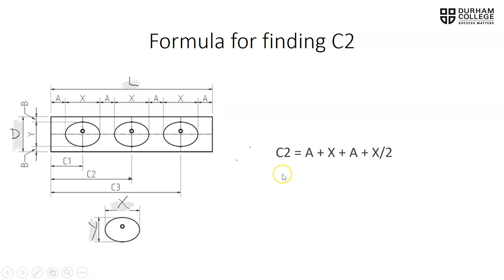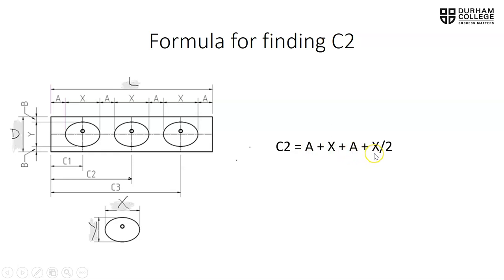For C2, we're going to take A, add X, add another A, and then add half of X. So looking at the diagram, we go A, then X, then A, then X/2. So: C2 = A + X + A + X/2, or 2A + X + X/2.